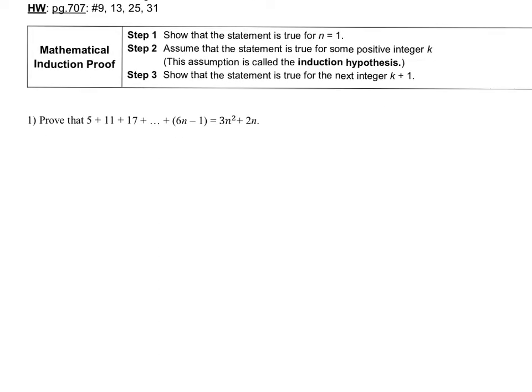Step one: show that the statement is true for n equals 1. On the left side we have an arithmetic sequence because it's going up by 6 — 5, then 11, then 17. We just keep going up until, well, it depends on what the n value is. So for step one, we need to show that the equation is true when n equals 1.